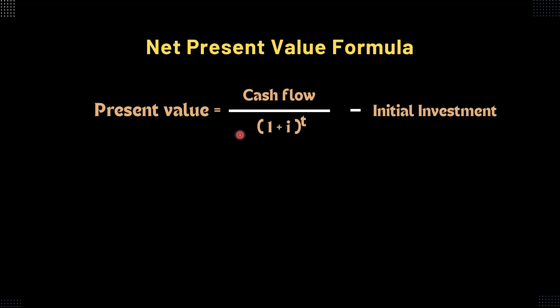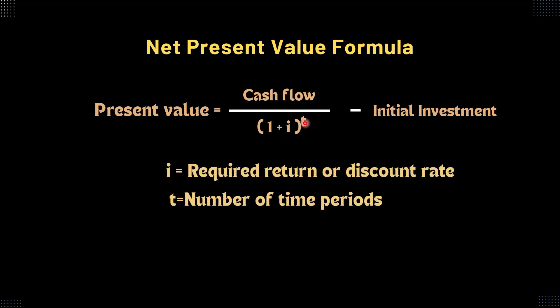Where i equals required return or discount rate, and t equals number of time periods.